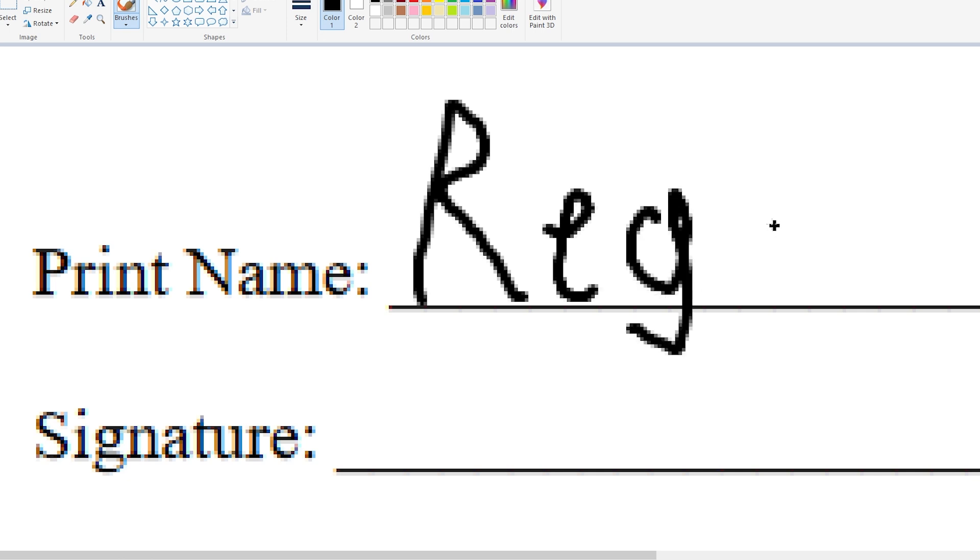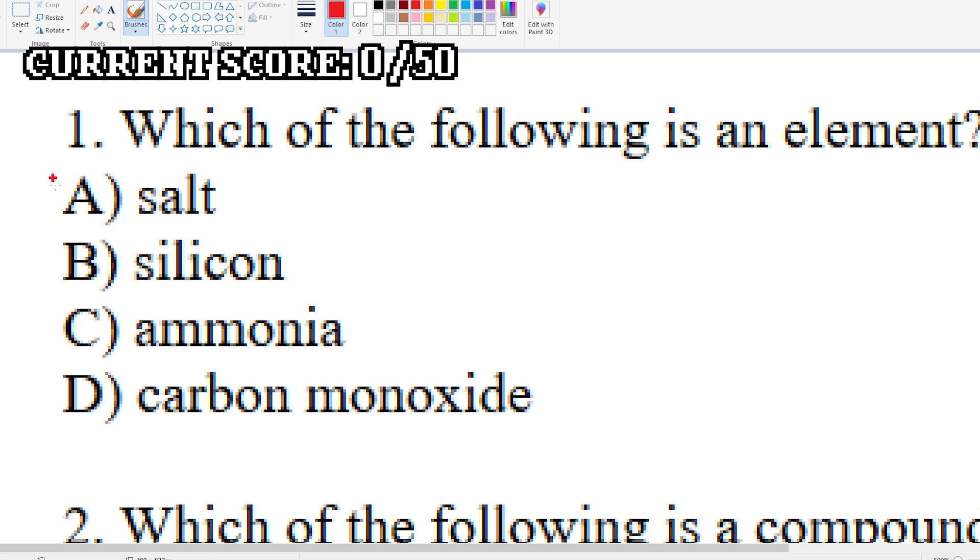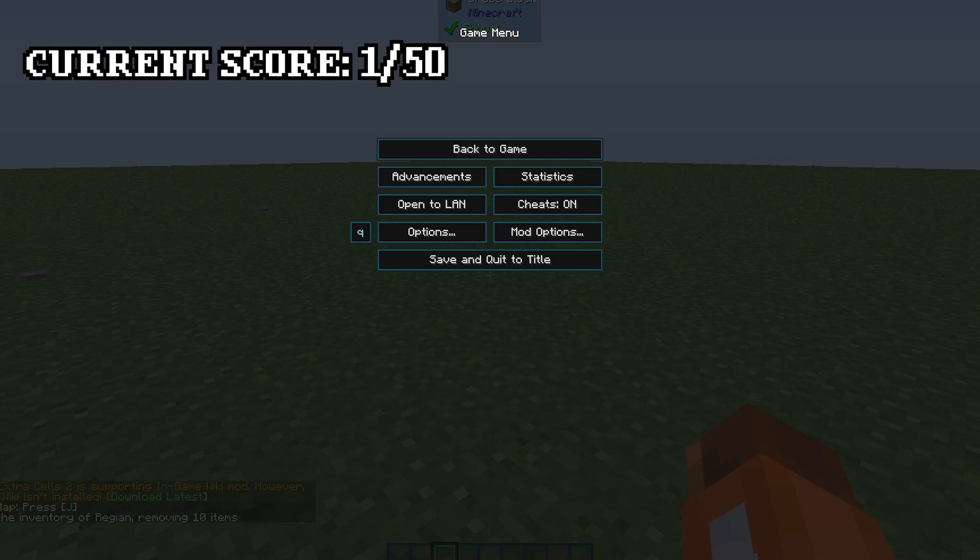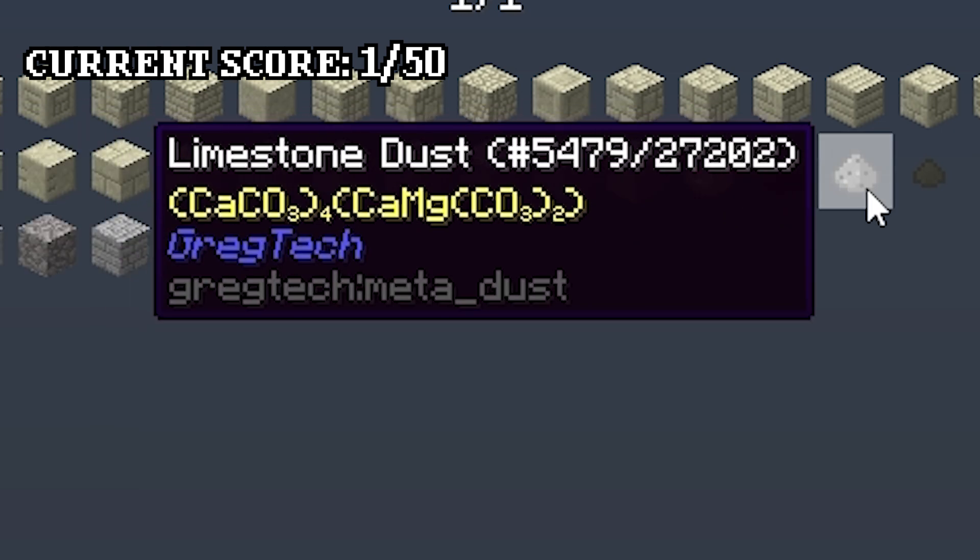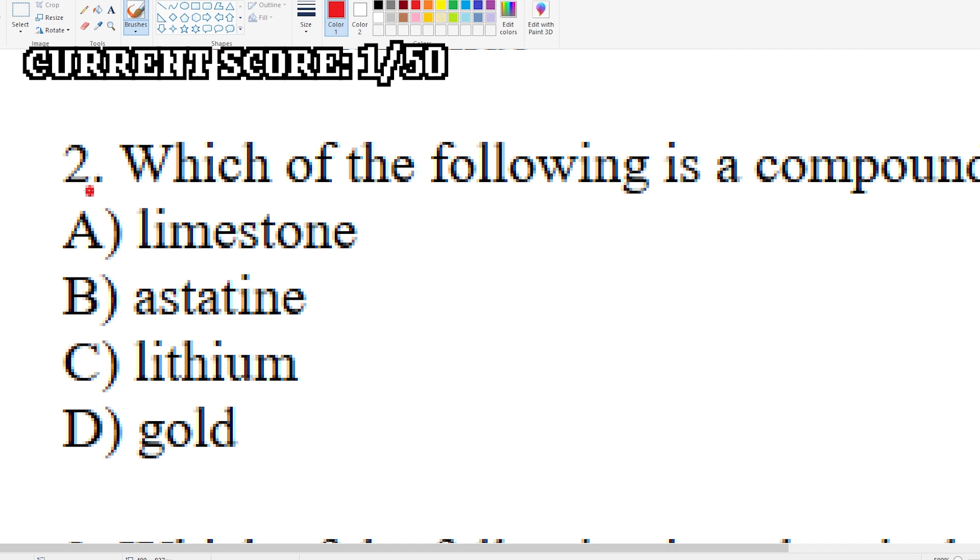Let's see how bad this goes. This has quintuple the amount of questions. Question 1 is easy enough. 1 point. Question 2 can be easily checked using the mod known as Just Enough Items. We can see that limestone has more than one element, as it is a compound.